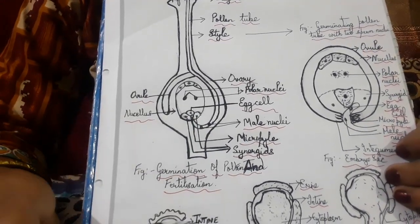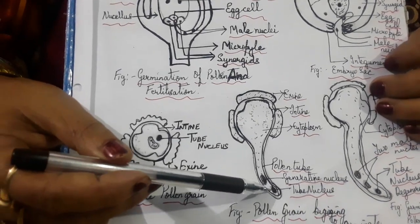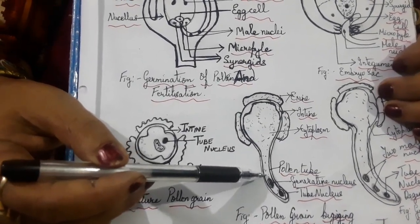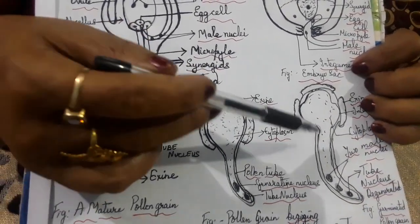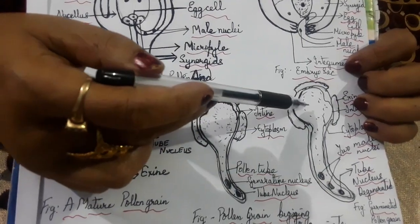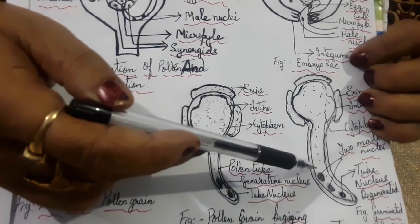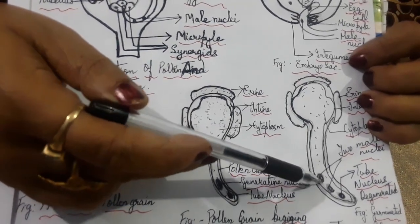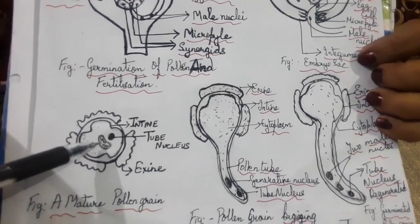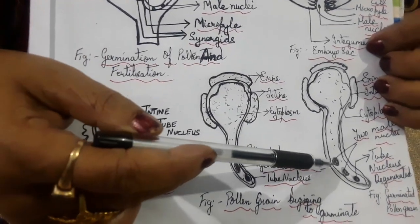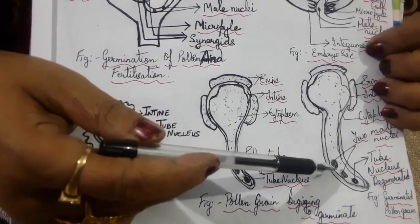The nucleus is of two types: tube nucleus and generative nucleus. The germinating pollen grain, after it has become matured — what is the function of the tube nucleus? It directs the male gametes or the male nuclei towards the micropyle. The generative nucleus divides into two and forms the two male gametes or two male nuclei.